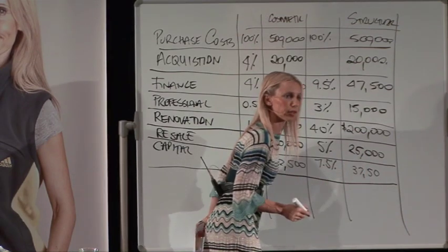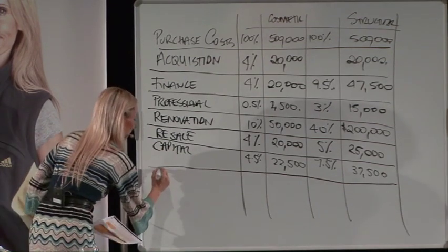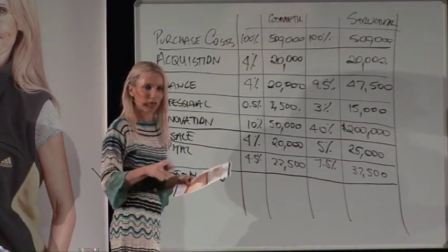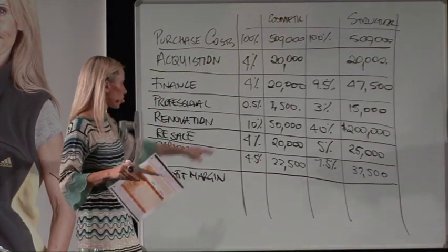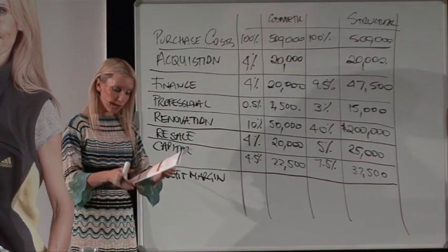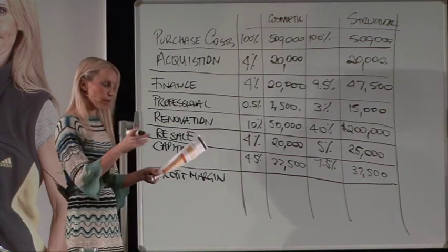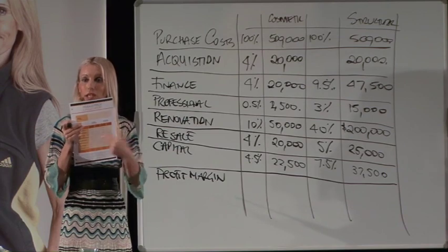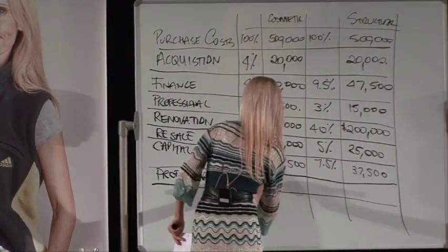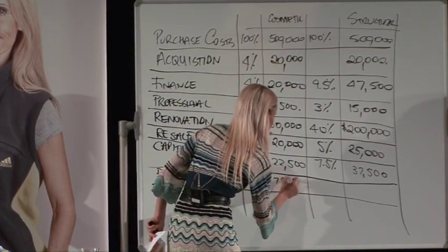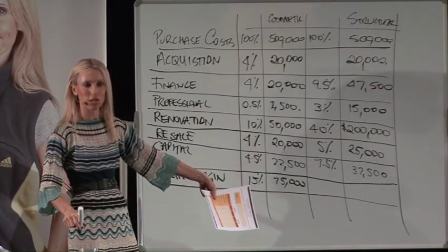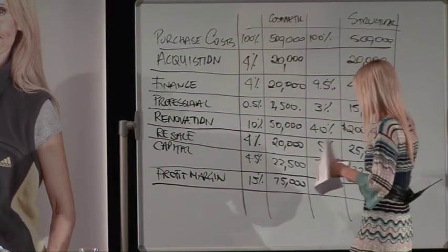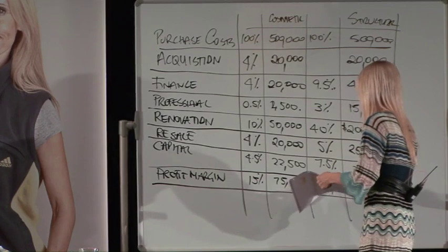Your profit margin — on a cosmetic reno you want to aim for 15%, and I've based it on 25% for a structural renovation. These calculators are also available in Microsoft editable format so you can change all the formulas. If you don't want to allow for capital gains tax you can take that out. On a cosmetic reno, 15% is $75,000. You might be happy to work for 10% and make $50,000 — just don't fudge the cost figures above, because those are real costs you will incur.